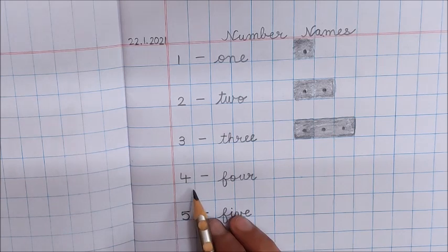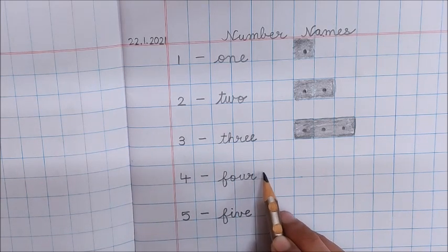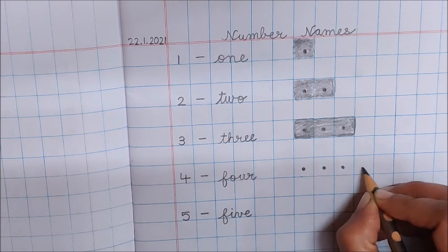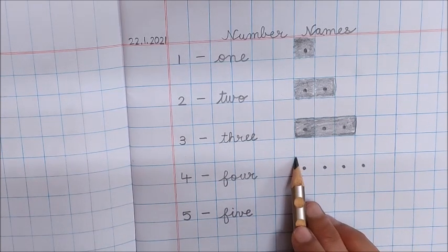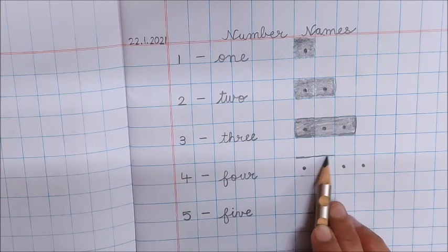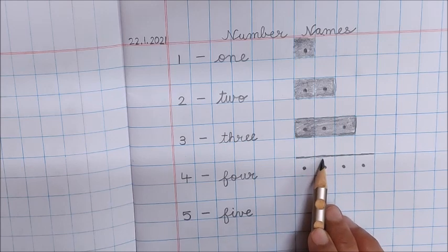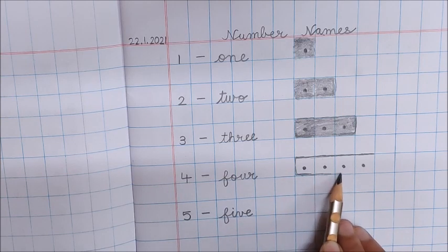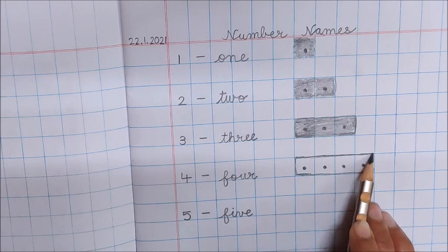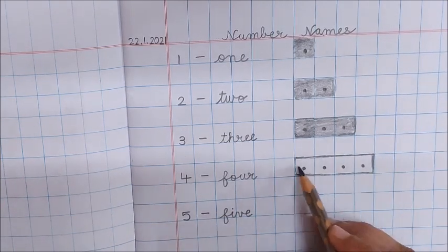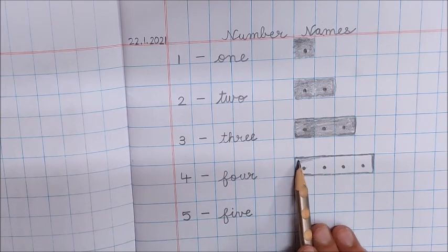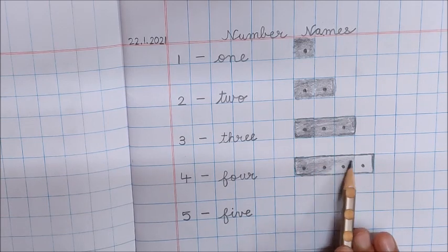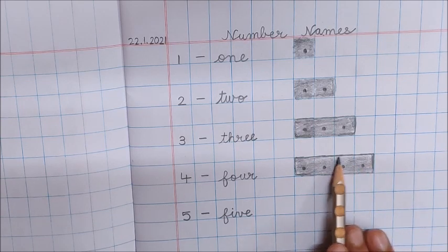Next number is four. Leave two boxes after the spelling and make four dots for number four — one, two, three, four. Now shading time. Let us make the boundary first. We will not do shading beyond this line. We are making the boundary first. Now do the shading. Done.